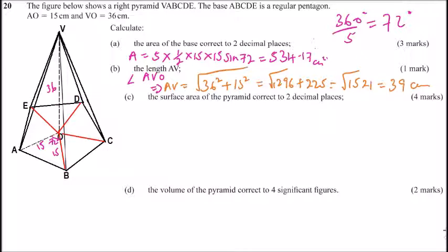We can take triangle AOB. This is O, this is A, B. It is 15 and it is 15. We want to get AB, because we already have AV. We can use the Hero's formula to find the area of the slanting triangle. This angle here is 36, and this is 36, because the total is 72.